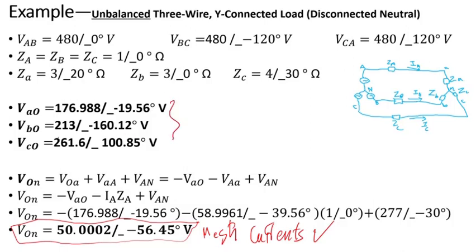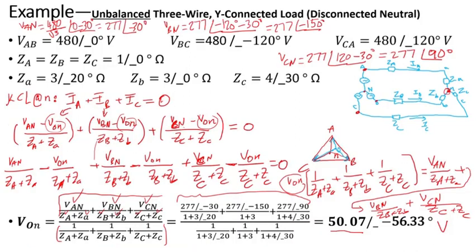The bottom line is: when you have a neutral that is not grounded, under unbalanced conditions that neutral voltage will not be zero — it's going to shift. If you were to draw these voltages, the neutral will not be at the center of the triangle. This is what we mean by neutral shift or neutral displacement, which occurs when the neutral is not grounded or becomes disconnected.